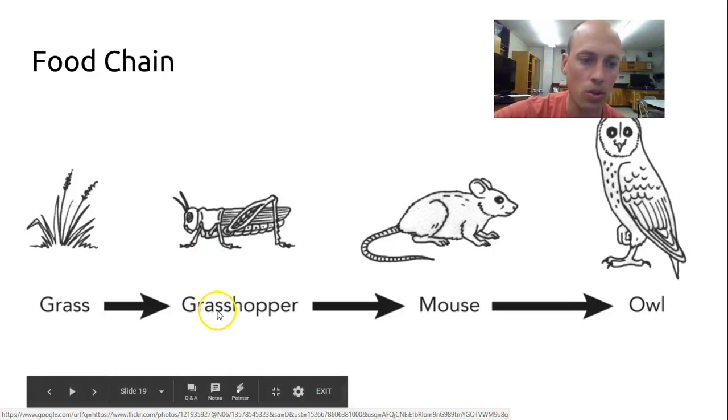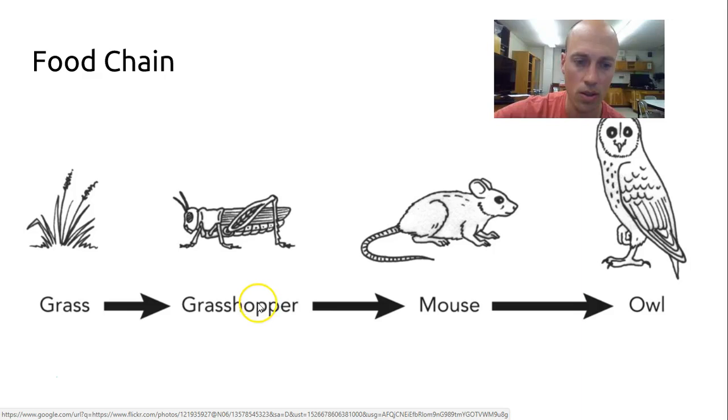So on this food chain, you have a grasshopper eating the grass. You have a mouse that would eat the grasshopper since the arrows indicate that. And then an owl would eat the mouse. Producer, primary consumer, secondary consumer, tertiary consumer.